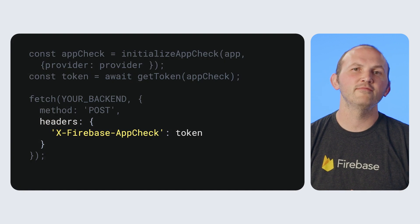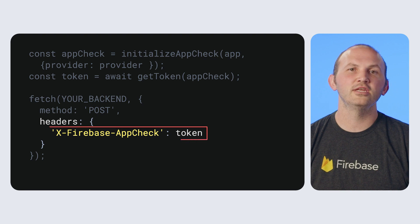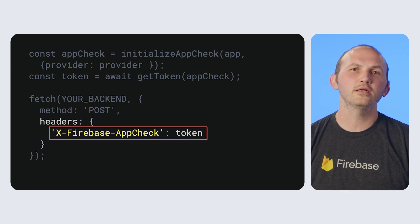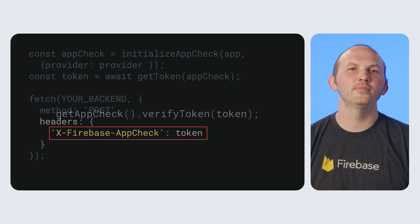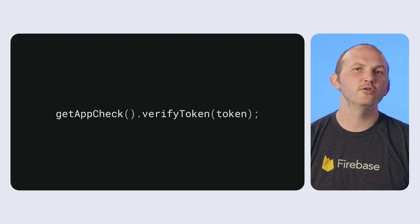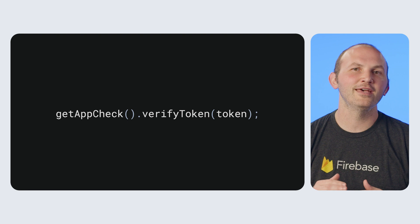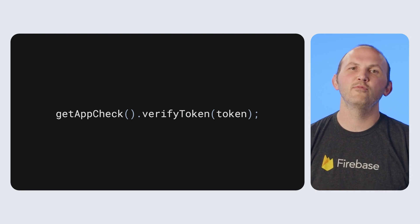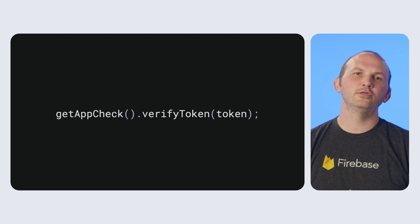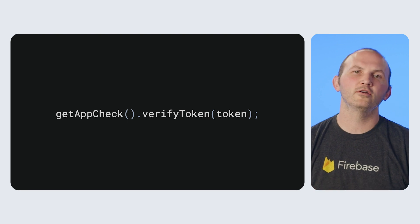After you have the token, you can then attach it in this header and send it along to your backend. Luckily, callable functions in Firebase automatically do this for you. If you are using the Admin SDK, you can verify the token is valid and then perform whatever you were planning on doing with the function.